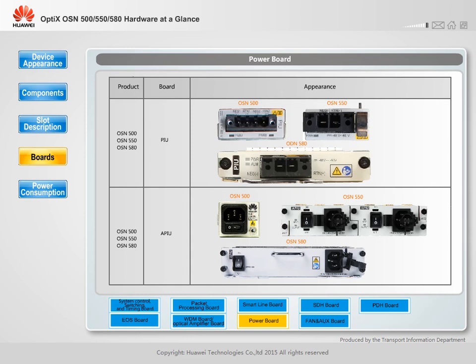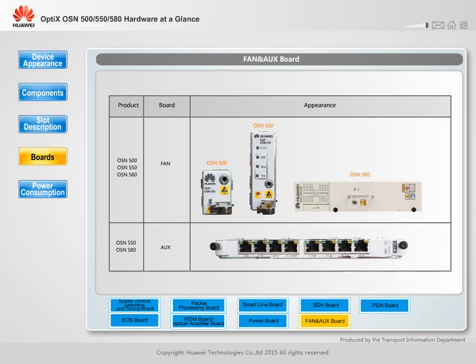A power board supplies AC or DC power to a chassis. A PIU board is used for DC power supply, and an APIU board is used for AC power supply. The two types of boards cannot be used at the same time. An AUX board provides auxiliary ports including external clock ports and alarm input and output ports. A fan board is used to dissipate heat generated by the equipment.